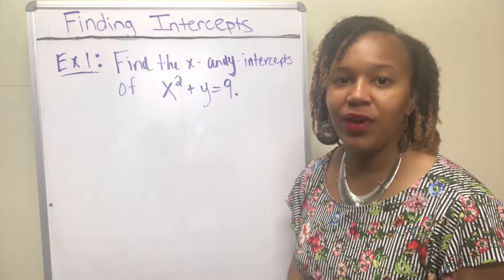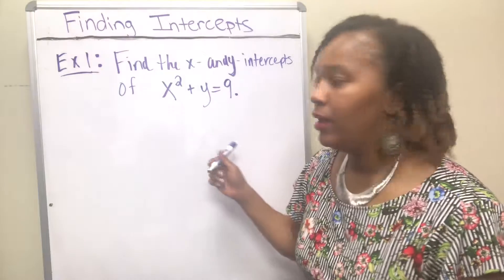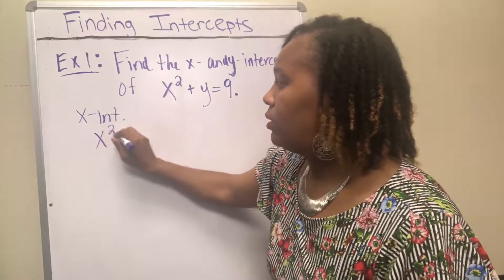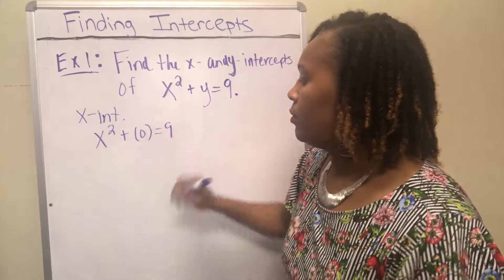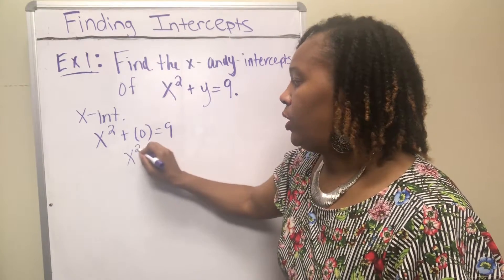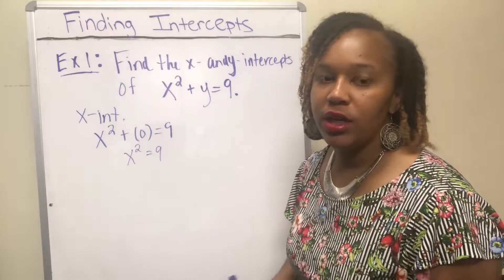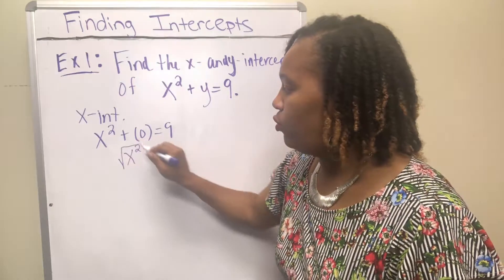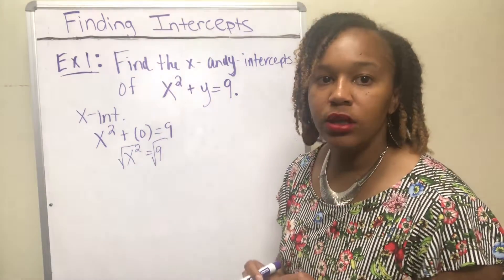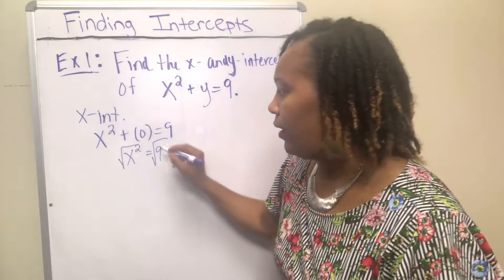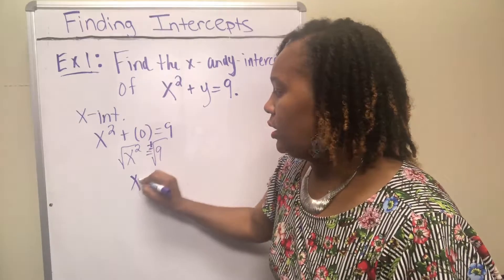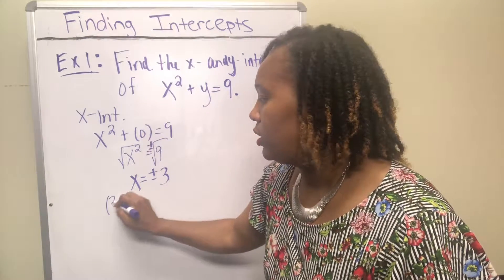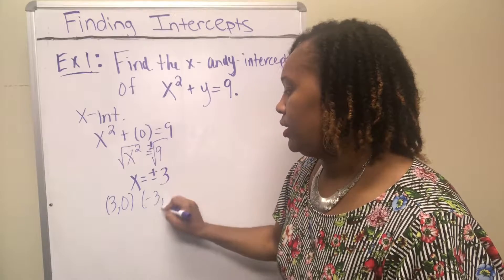Here's another one. Let's find the x and y intercepts of x squared plus y equals nine. We'll start with the x intercept, so we let y equal zero. x squared plus zero is just x squared, leaving us with x squared equals nine — a quadratic equation due to the exponent of two. To get rid of the square, you take the square root of both sides. Remember, whenever you take the square root of both sides you take both the positive and negative value. So x equals plus or minus three, giving two x intercepts: three comma zero and negative three comma zero.